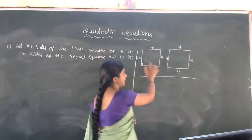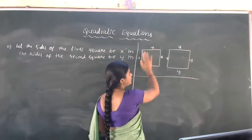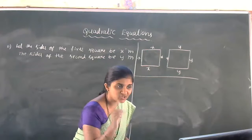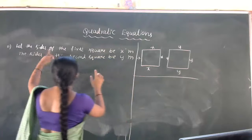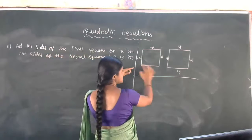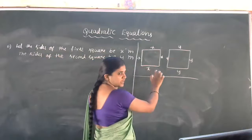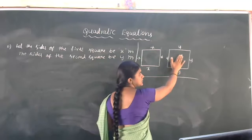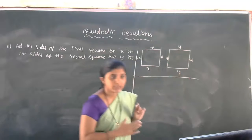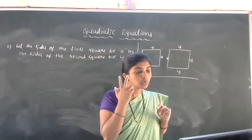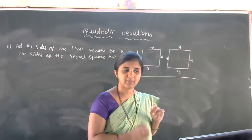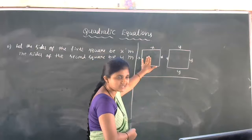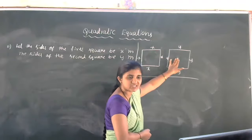We have two squares. Let the sides of the first square be x meters and the sides of the second square be y meters. You may wonder why we are using two variables when we are discussing a quadratic equation with only one variable — don't worry, we will get the final answer.